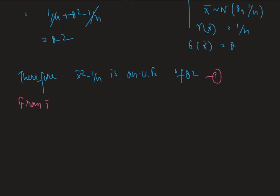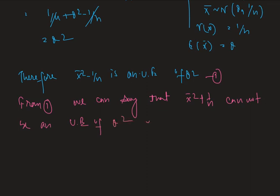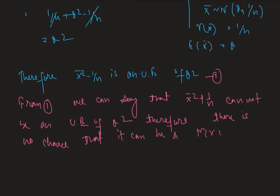From the calculation, we can say that x-bar squared plus 1/n cannot be an unbiased estimator of theta squared. Therefore, there is no chance that it can be a minimum variance unbiased estimator.